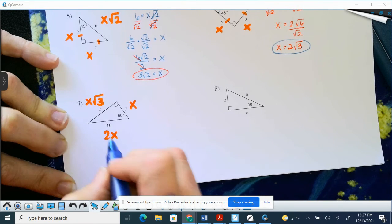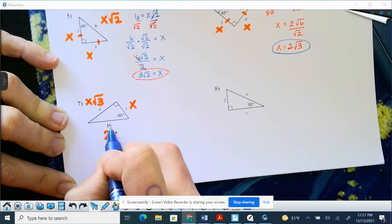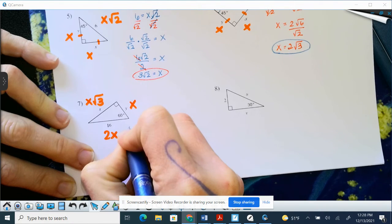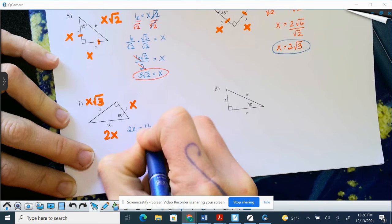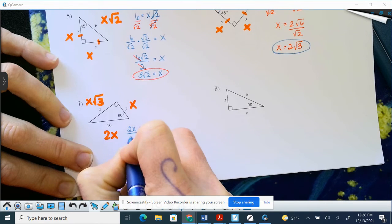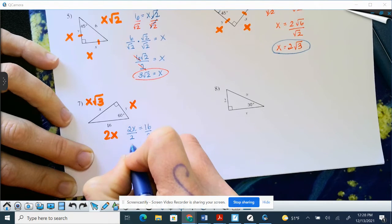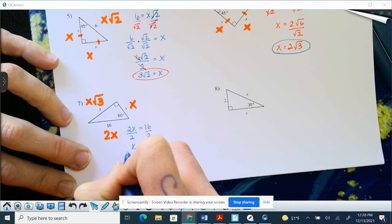All right. So if I know 16, I always go for my whole number first. 16 is 2X, so that means I can solve for X fairly easily. 2X equals 16, divide by 2 to get X by itself. So X is going to equal 8.